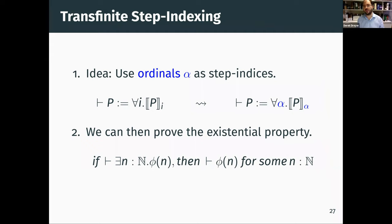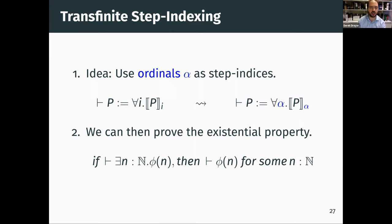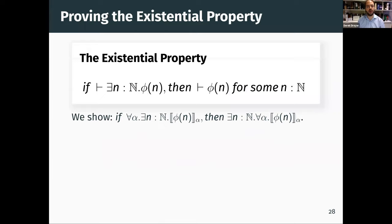We build models over ordinals α instead of natural numbers. The model is similarly structured — the meaning of a proposition P is: for all ordinals α, P(α). Using this, we now have a big enough space of step indices to defeat the dependency of the existentially quantified N on the universal step index. Since this is a semantics audience, I'll actually show you one proof — how we prove the existential property.